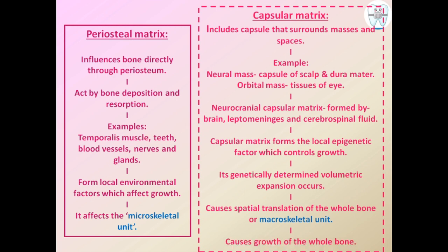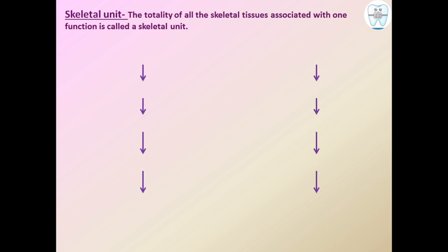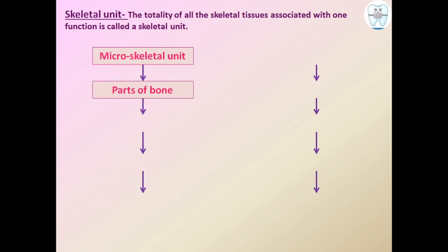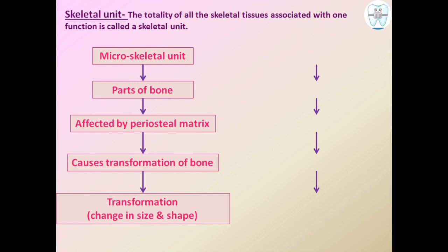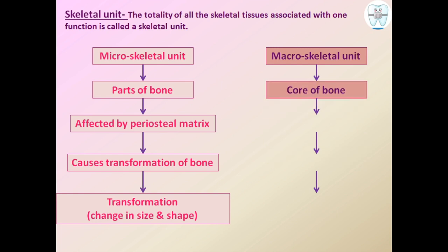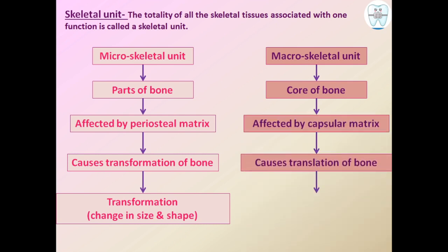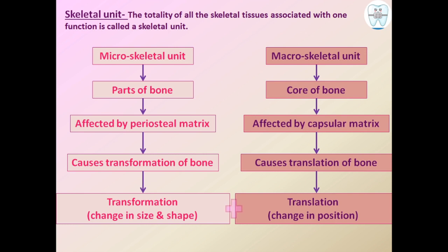The capsular matrix causes the growth of the whole bone. The skeletal unit includes the totality of all skeletal tissues associated with one function. It has two subtypes: the microskeletal unit, which includes parts of bone affected by periosteal matrix and causes transformation — meaning change in size and shape — and the macroskeletal unit, which is the core of the whole bone, affected by capsular matrix, causing translation, which means change in position. Transformation and translation together lead to bone growth.